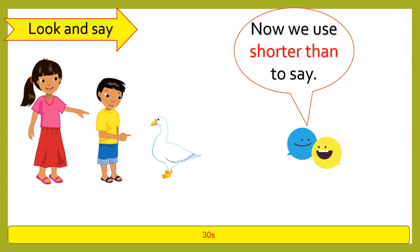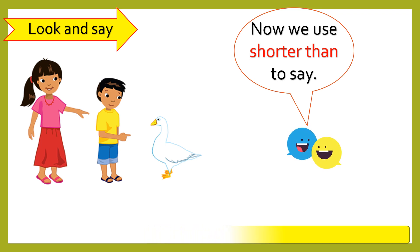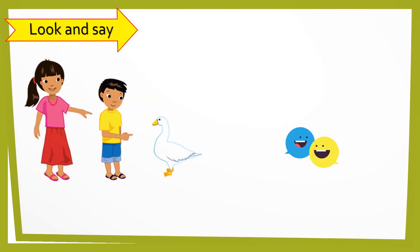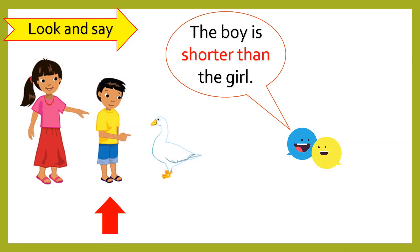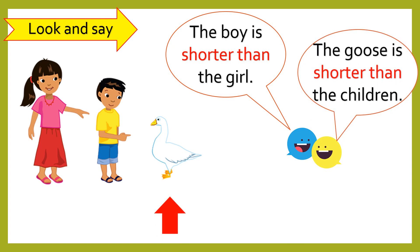Now, you use "shorter than" to say the sentences. Have you finished? Let's check. The boy is shorter than the girl. The goose is shorter than the children.